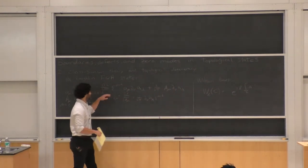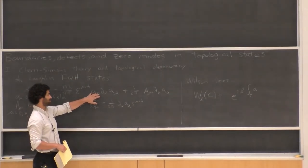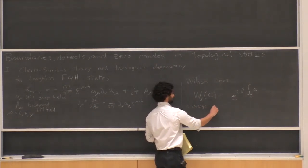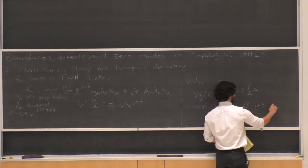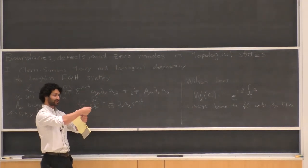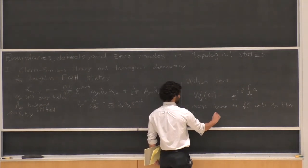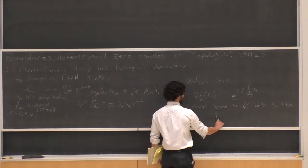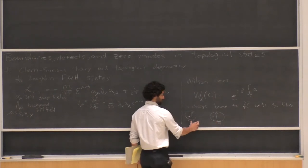These quasiparticles, whose worldlines are described by these Wilson line operators, carry charge L. From the Chern-Simons term, you can see that the Chern-Simons term binds charge to flux: one unit of charge is bound to 2π/M units of the 'a' flux. The fact that quasiparticles are charge-flux composites is why they have fractional statistics — when you take something with charge 1 and flux 2π/M around another such object, you get a fractional phase from the Aharonov-Bohm effect.